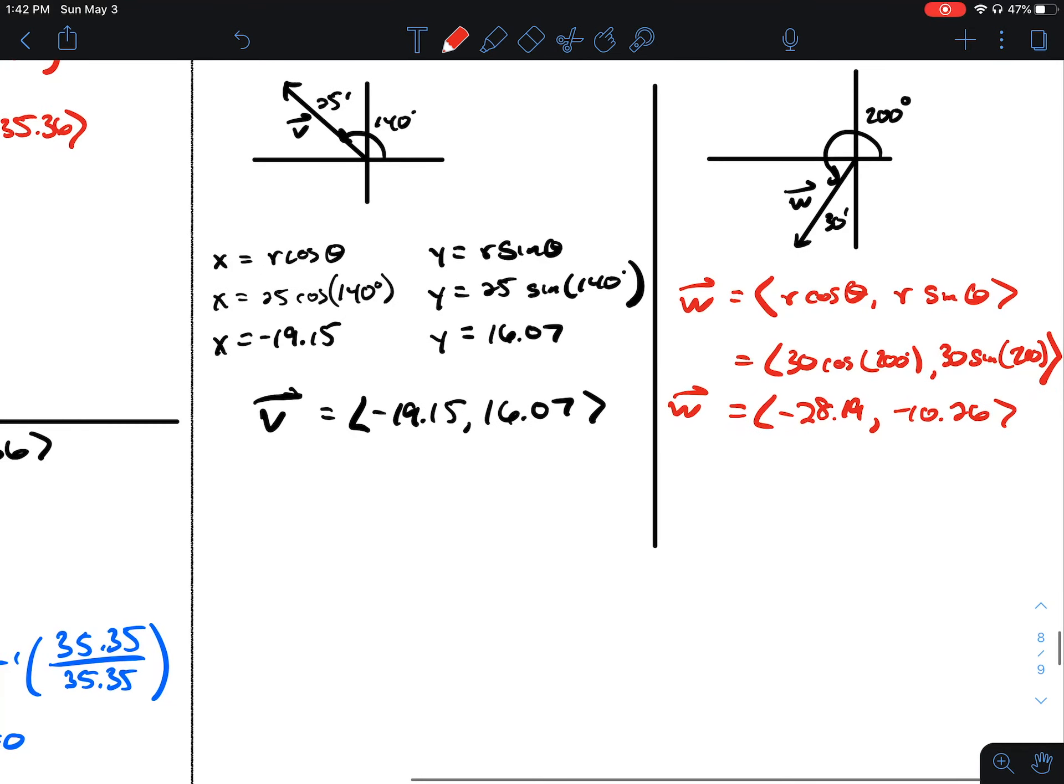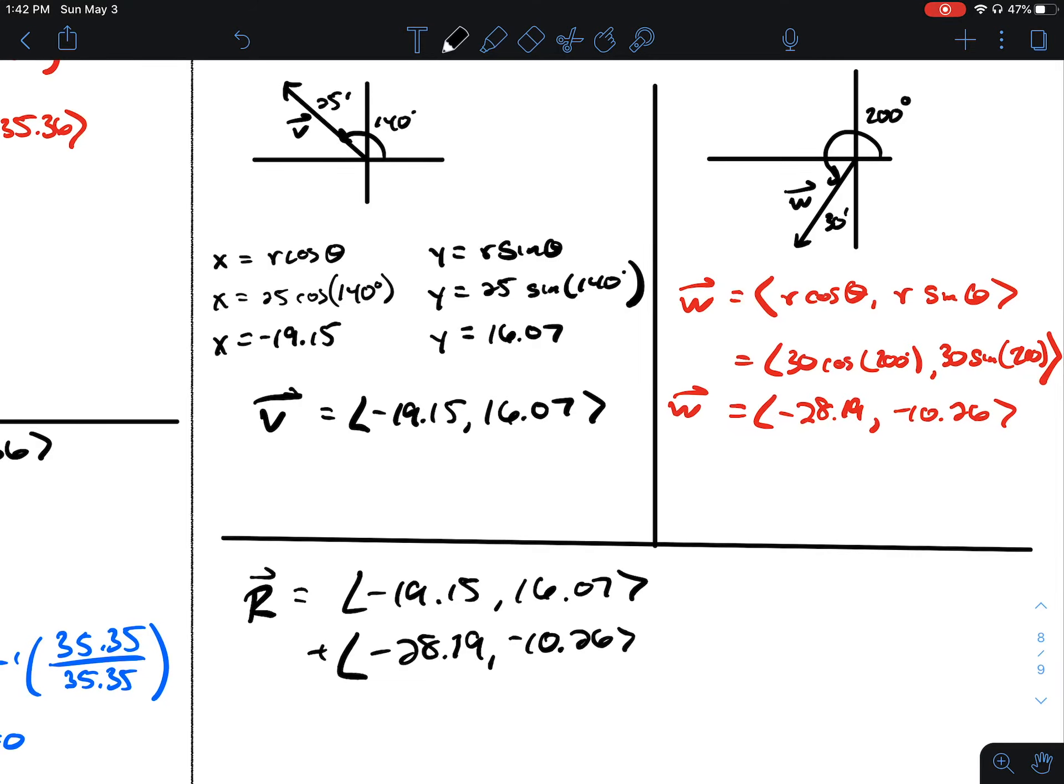The resultant of this, if we add the x components and y components together, is going to be negative 19.15 and 16.07 plus negative 28.19 and negative 10.26.